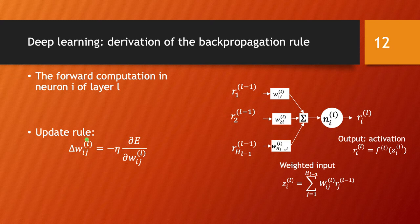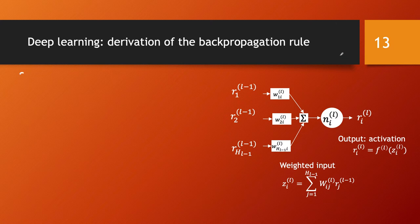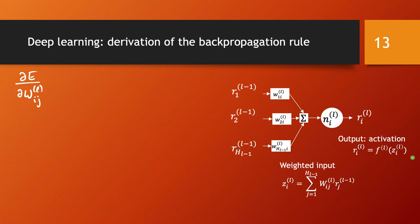The update rule is: delta w equals minus eta times the partial derivative of the error function with respect to the parameter we are updating. So let's take this partial derivative — it's the partial derivative of e with respect to w_l_i_j. We need to figure out how this entry in the weight matrix contributes to the error function, which is calculated in the output layer.